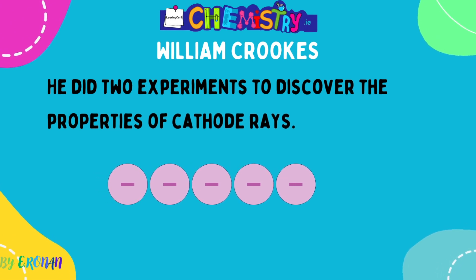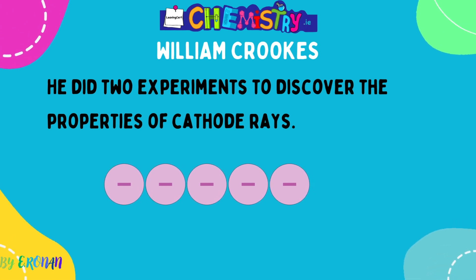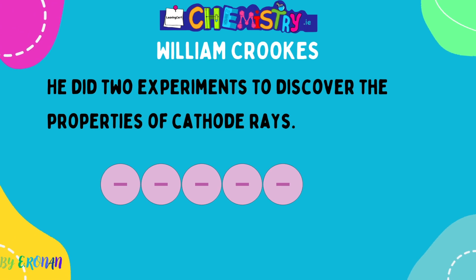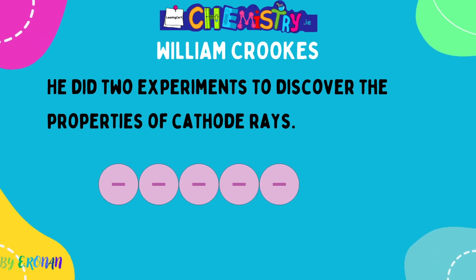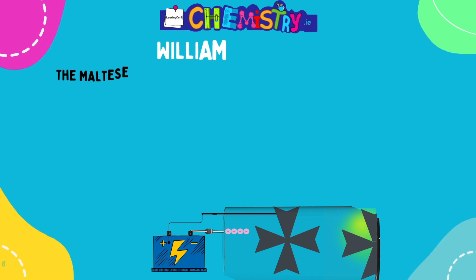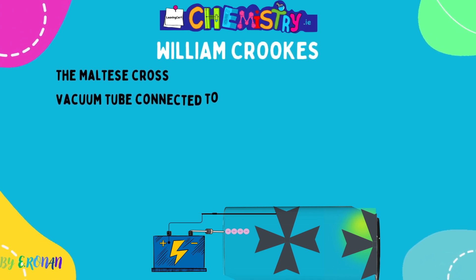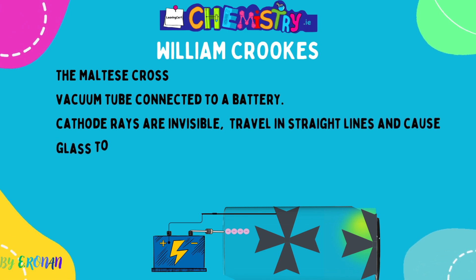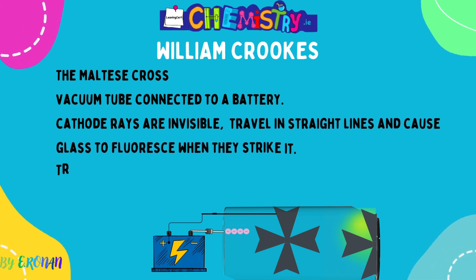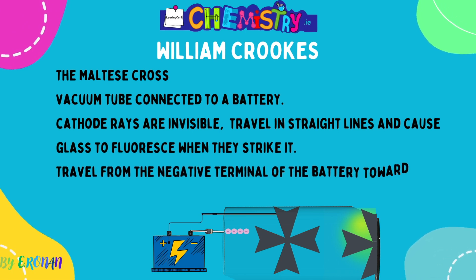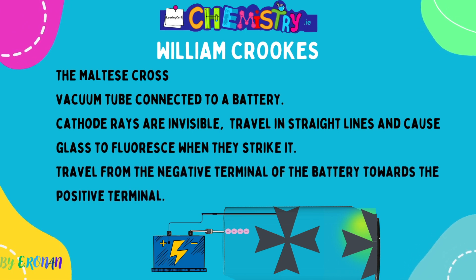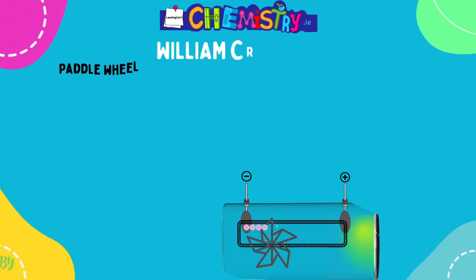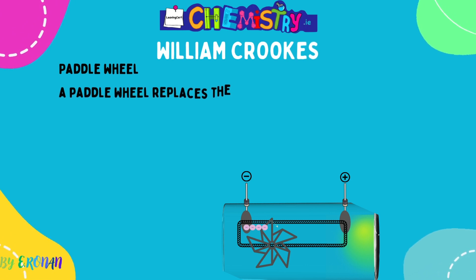Crookes's first experiment involved the Maltese cross. He used a vacuum tube — a tube at low pressure so that air particles didn't interfere with his experiment. He connected a battery to the vacuum tube and placed a Maltese cross in the centre. He discovered that cathode rays are invisible, travel in straight lines, and when they hit glass they cause it to fluoresce or glow. The shadow of the Maltese cross was cast at the back of the tube, as cathode rays could not travel through it. Cathode rays travel from the negative terminal (the cathode) towards the positive terminal (the anode).